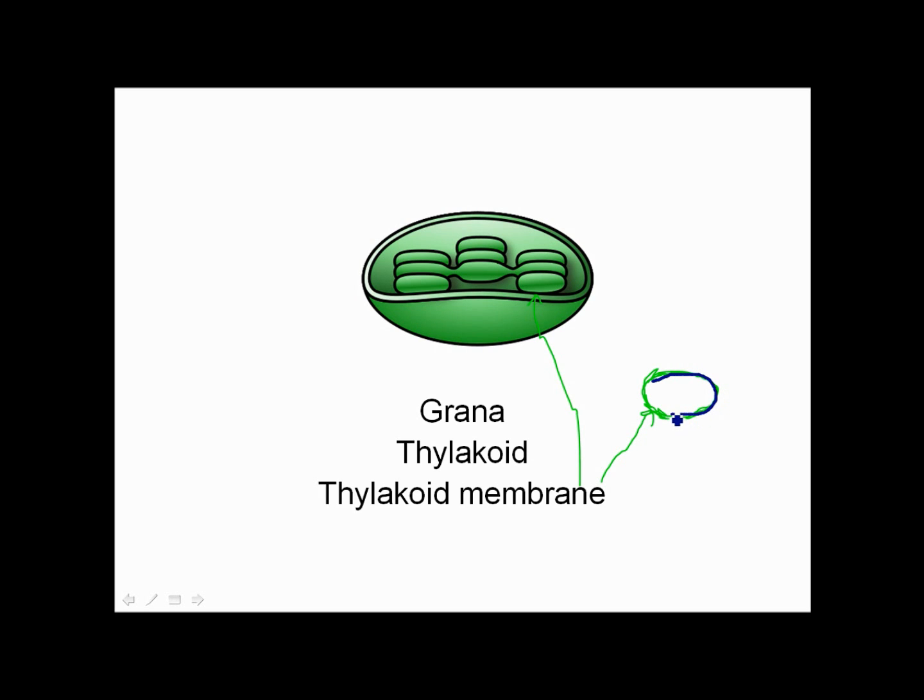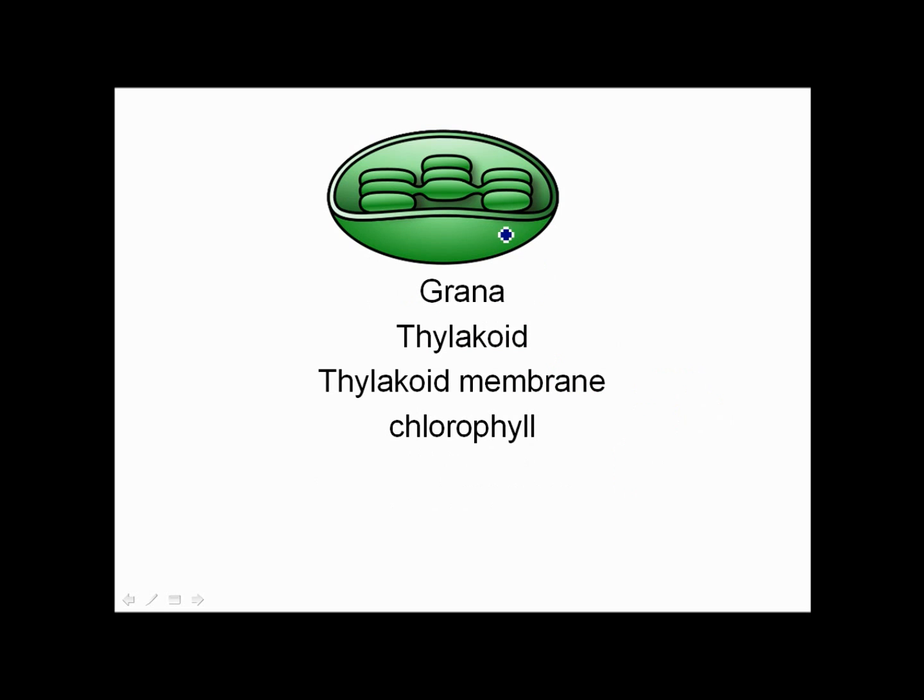You've seen what cell membranes look like in other cells. If you can imagine you've got your phospholipids and then you have proteins embedded in them, and along with the proteins we've got lots of chlorophyll embedded in the membrane of this thylakoid. So in the thylakoid membrane there's lots of chlorophyll, it's right here along inside the membrane.